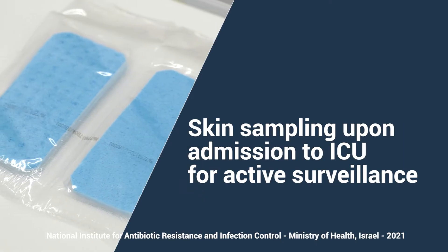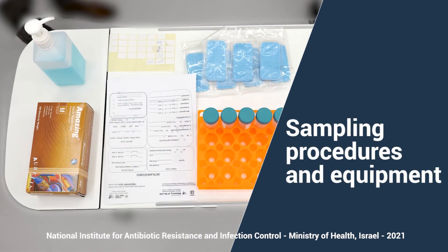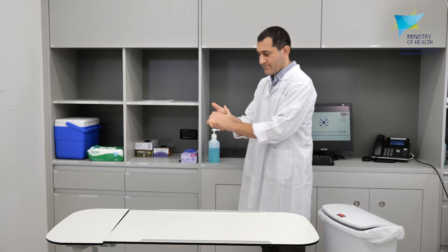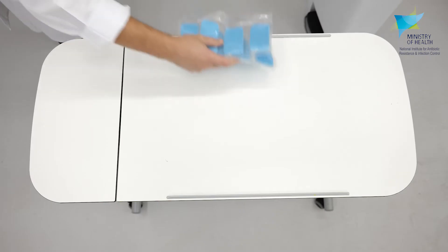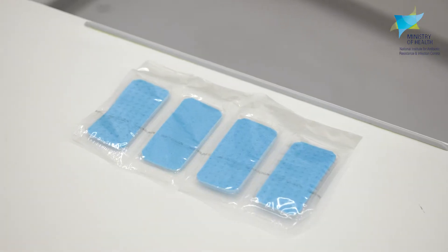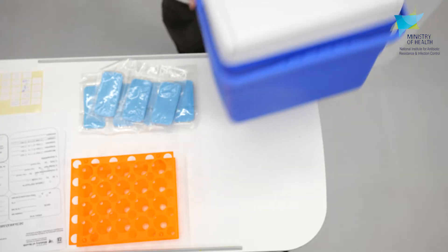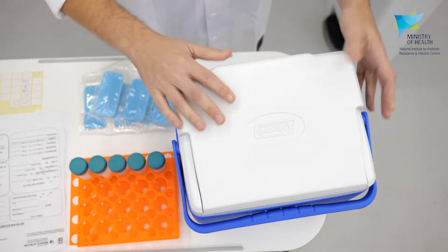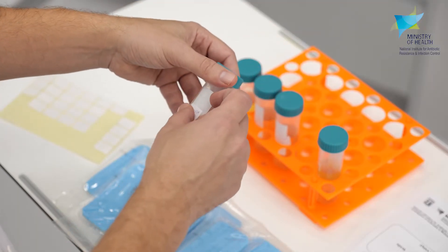Skin sampling upon admission to ICU for active surveillance. Prepare all the necessary equipment according to the sampling plan and place on a disinfected work surface. We will use a sterile sponge swab containing a buffer that neutralizes disinfectants and antibiotics, and sterile conical test tubes containing 30 milliliters of enrichment broth for incubation. These serve to increase the sensitivity of the screening tests.